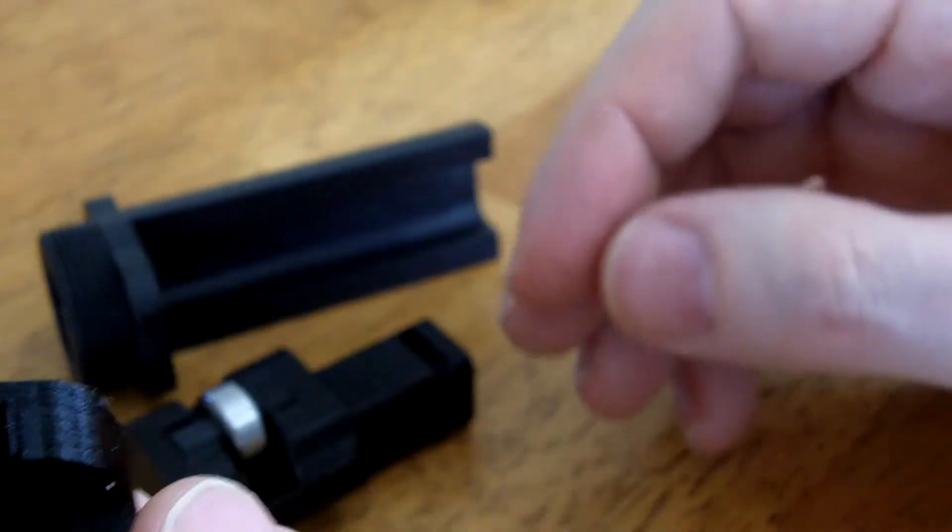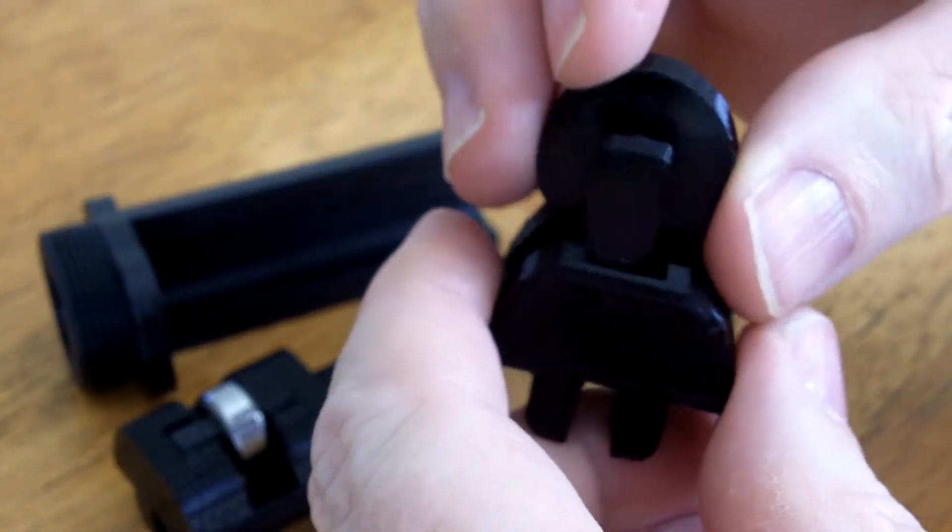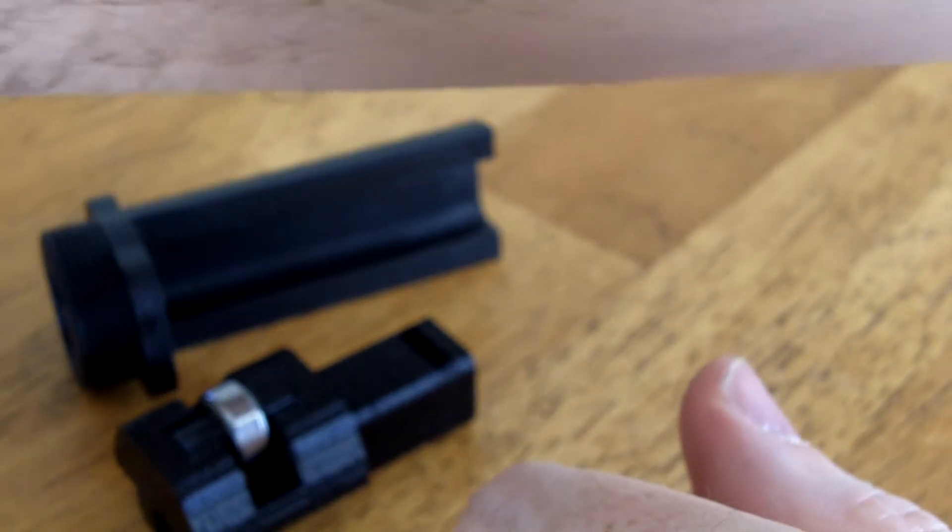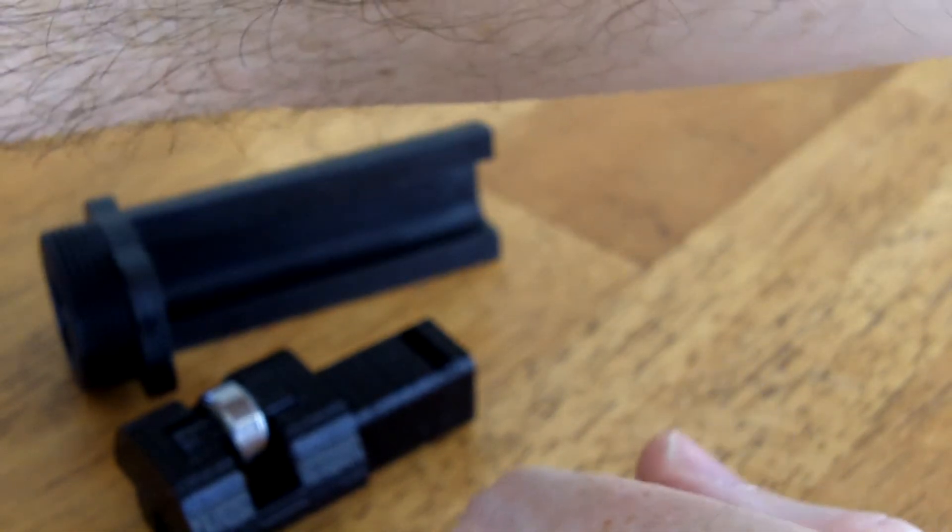Push it all the way down until it clips in. And then you would just take this big part and stick it in, and it'll fit. So that's how you use the 608 bearing or the 608 bushing.